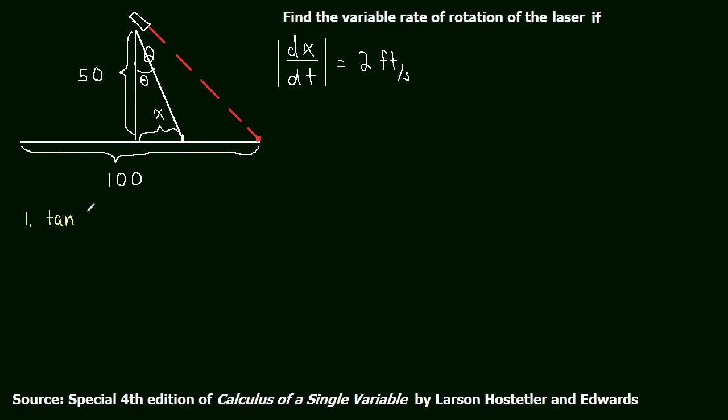The tangent of the angle theta is equal to x over 50. Because no matter what x you pick, you're going to have this opposite side, which is just x. So for any arbitrary x, the opposite side is going to be x. And the height is going to be 50. So tangent of theta is x over 50.